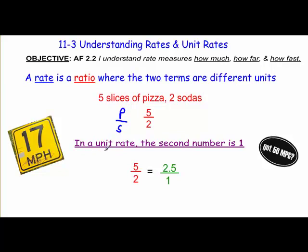In a unit rate, the second number in the ratio is one. So we can convert that. How do we turn two into one? We have to divide by two over two. Two divided by two equals one, and since we have to use the magic one, five divided by two is 2.5. So this is equal ratios — five to two is the same as two and a half to one.